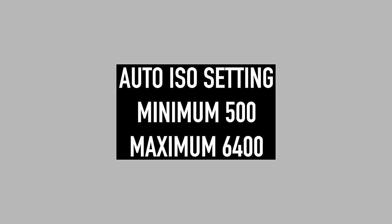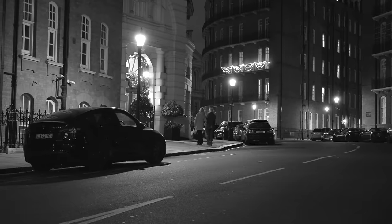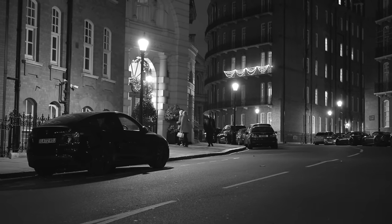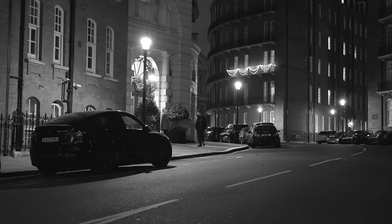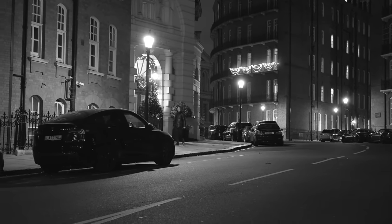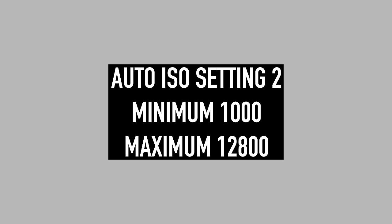For the ISO, I will typically have this between 500 and 6400 for most nighttime scenarios and I have never run into issues with this particular setup. However, if you're shooting on a slower lens, for example f4, or perhaps shooting in a part of town that doesn't get as much light from windows and street sources, then you might want to set it a bit higher — around 1000 minimum and 12800 maximum. However, 500 to 6400 is a good starting point.